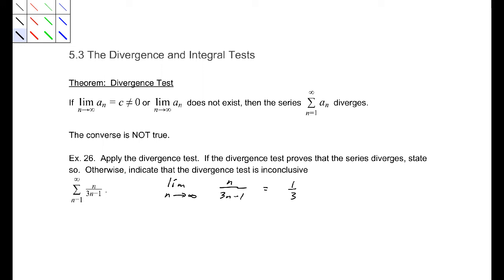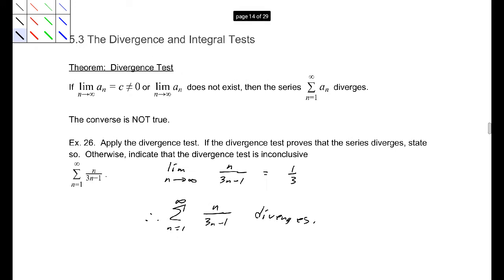that limit is going to be one-third. So that means, therefore, the sum from 1 to infinity of n over 3n minus 1 diverges. Fantastic news, if that's the case. We now know something. We know that it diverges.